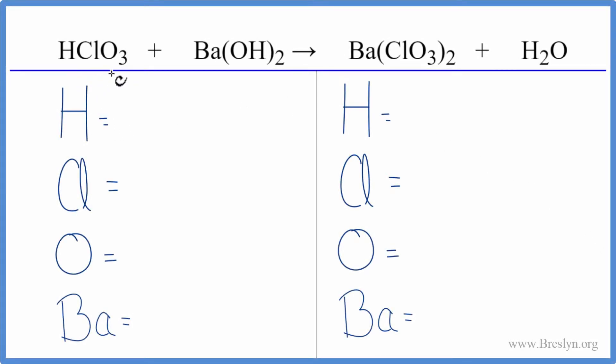To balance this equation, HClO3 plus Ba(OH)2, let's count the atoms up on each side of the equation.